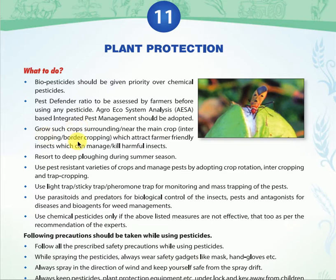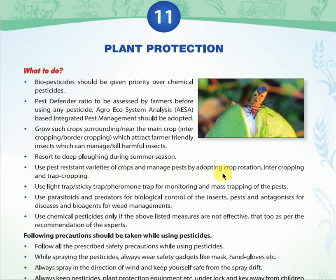Grow such crops surrounding near the main crop through intercropping and border cropping, which attracts farmer-friendly insects and kills harmful insects. There are eco-friendly organisms like Trichoderma and Trichogramma. Resort to deep plowing during summer season and use pest-resistant varieties of crops.